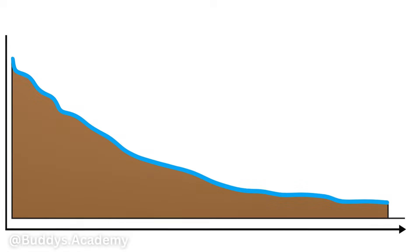Now let's take a quick look at the characteristics and the landforms that are going to be found in each course of the river — your upper, middle and lower course — because what if they give you an image of a certain course and then proceed to ask you questions based on that specific course? That's why it's important for us to know the various characteristics and landforms that are going to be found in that course.